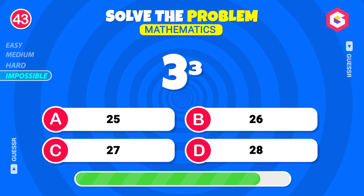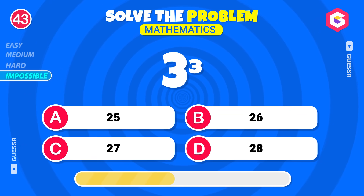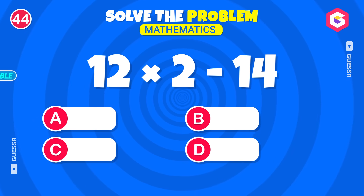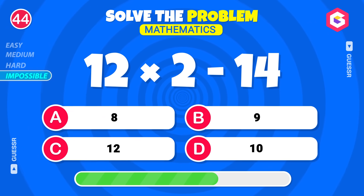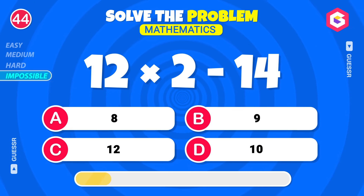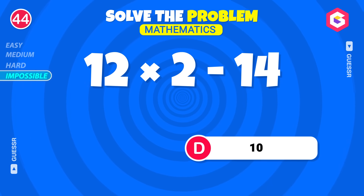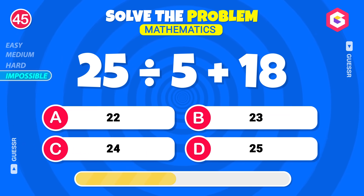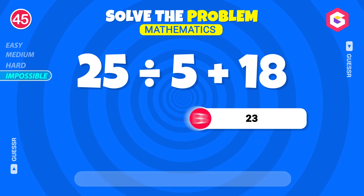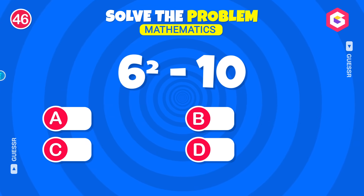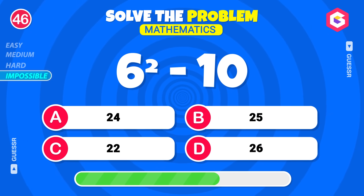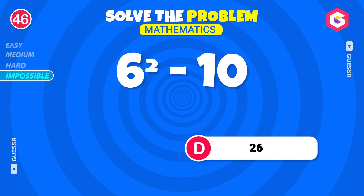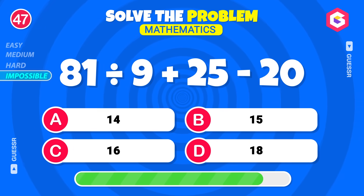What's the cube of 3? Solve this equation now — 12. What's 25 divided by 5, then add 18? 25. What about this one — 26. Divide 81 by 9, then add 25 minus 20.